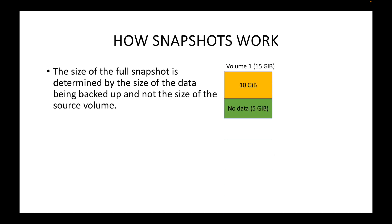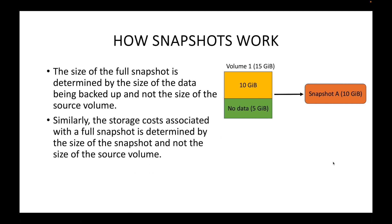A snapshot follows the incremental model, and the size of the full snapshot is determined by the size of the data being backed up, not by the size of the source volume. For example, if your EBS volume is 15 GB but you only have 10 GB of data stored, the snapshot will be for that 10 GB only. Similarly, storage costs are determined by the size of the snapshot and not the size of the EBS volume.